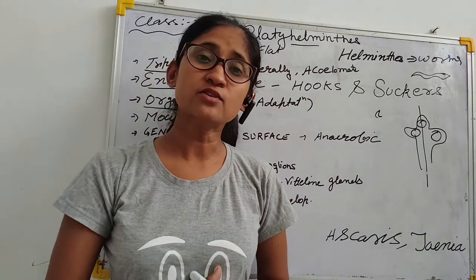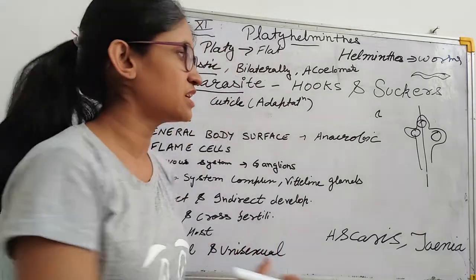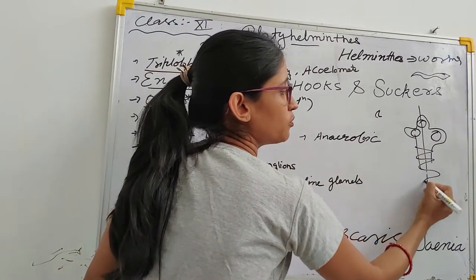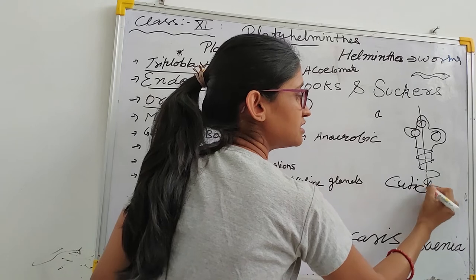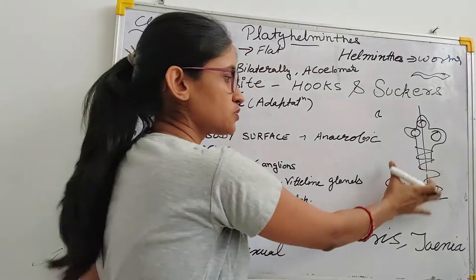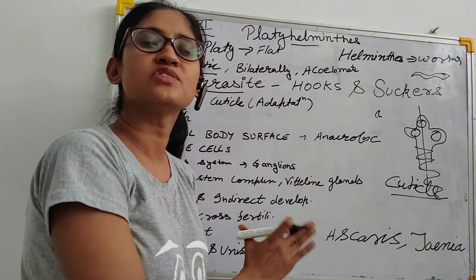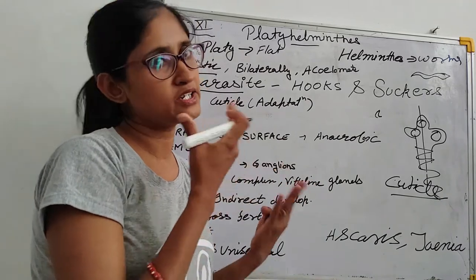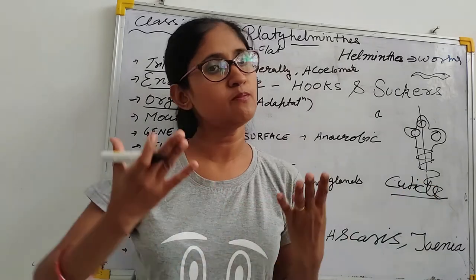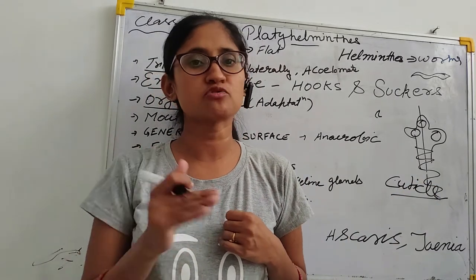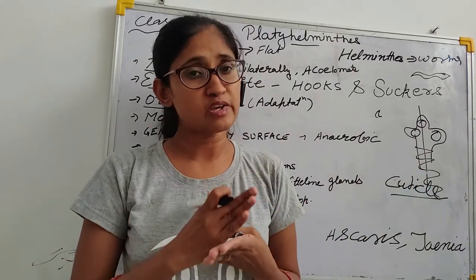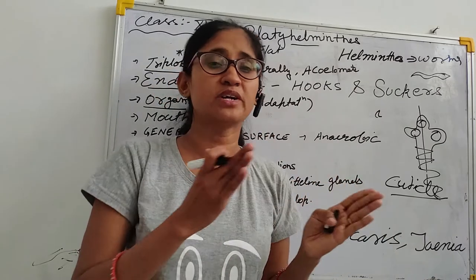There is another adaptation of endoparasites: a cuticle is present on the whole body. This cuticle protects them from digestive juices so they can survive inside the host. Because they are inside the body, they do not need aerobic respiration — that is why respiration in these animals is anaerobic.